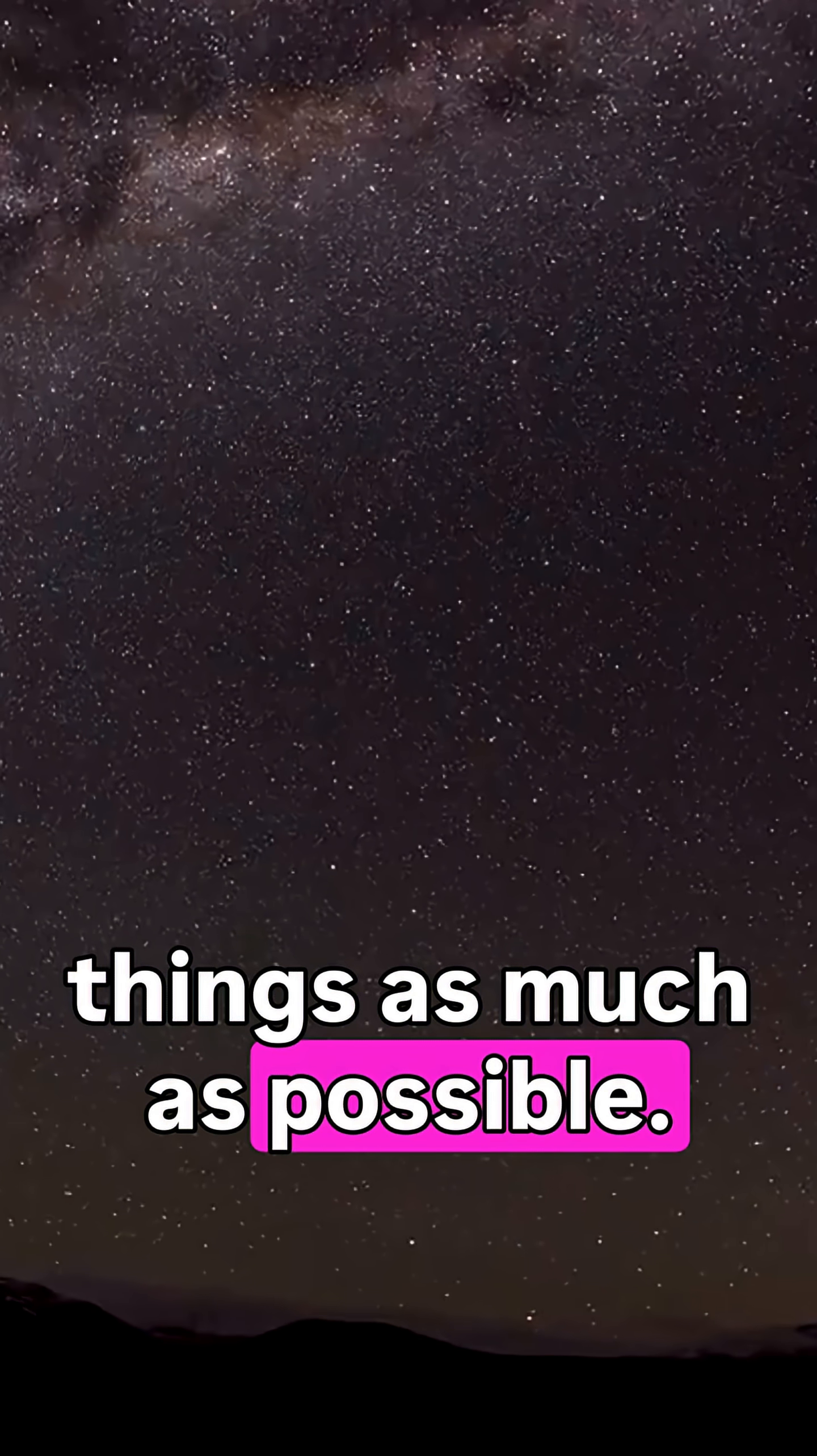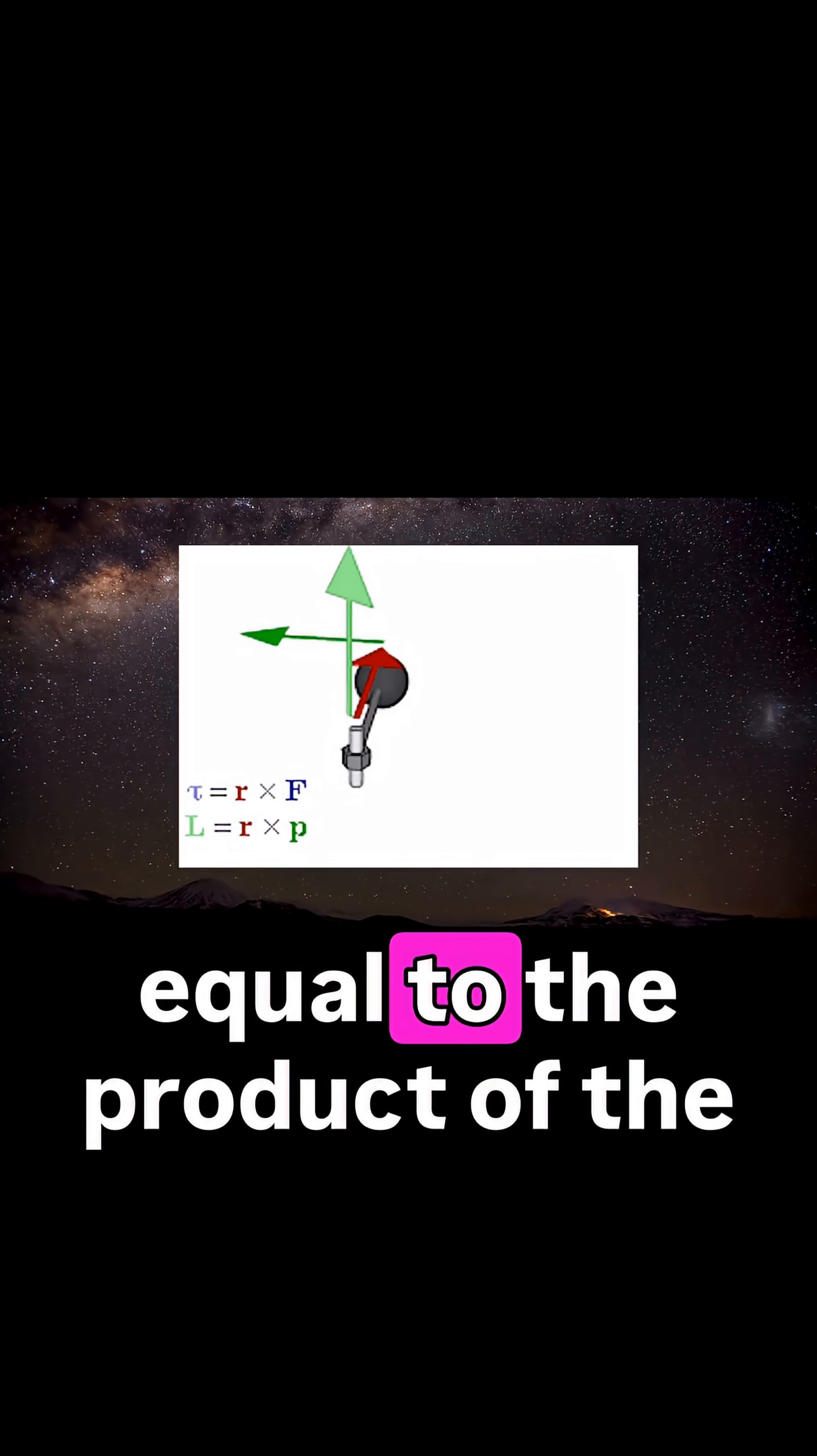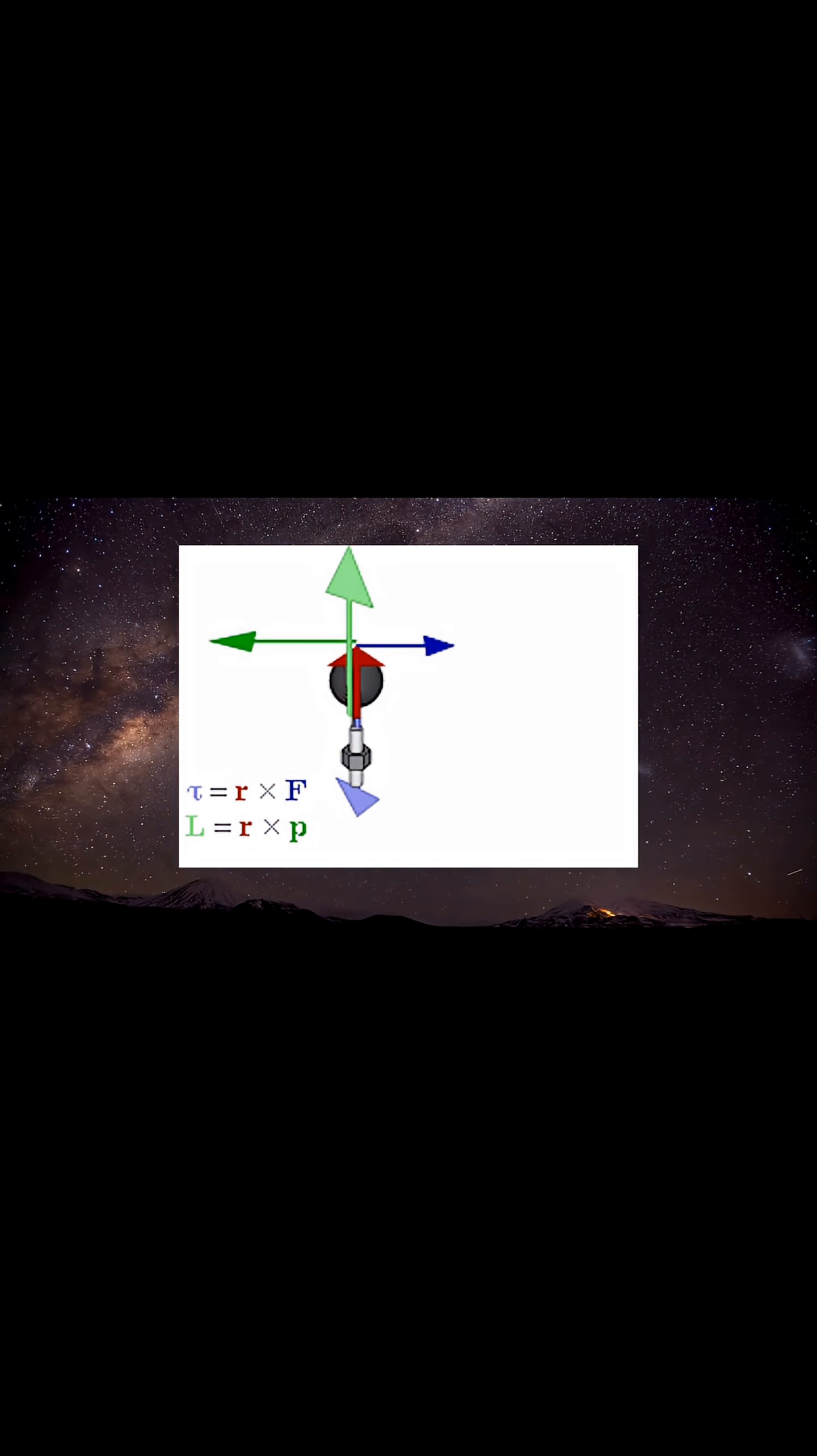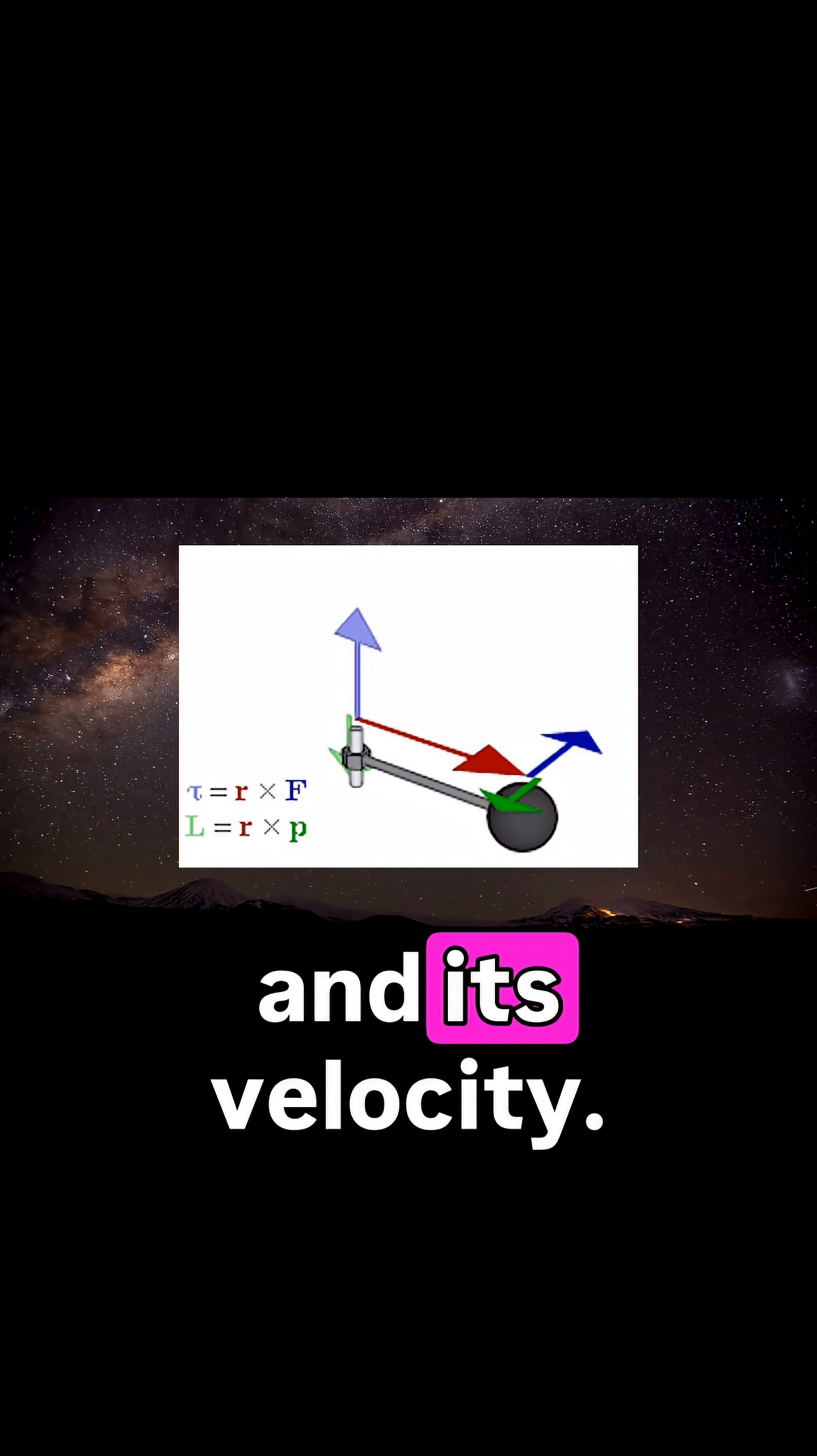Let's simplify things as much as possible. In that case, angular momentum is a quantity equal to the product of the momentum of a body and the distance from that body to the point around which it rotates. In contrast, momentum itself is the product of the body's mass and its velocity.